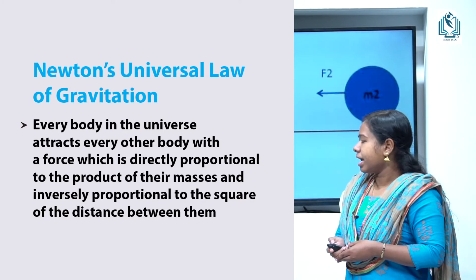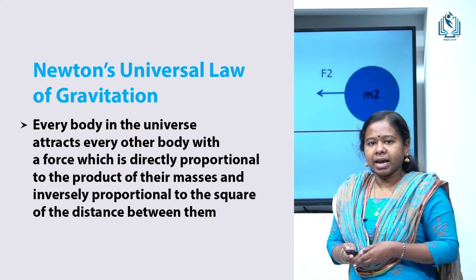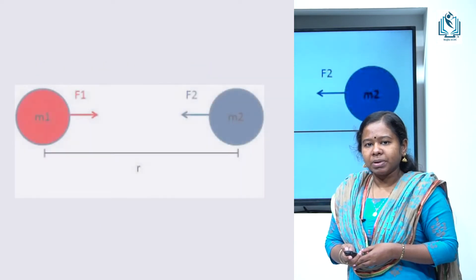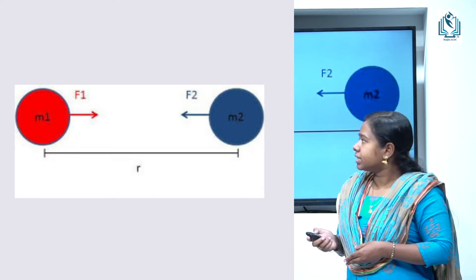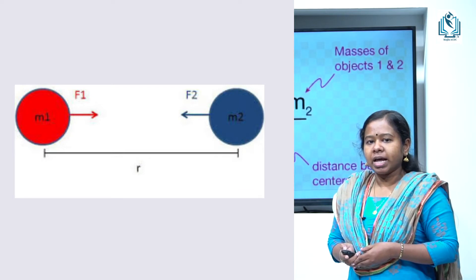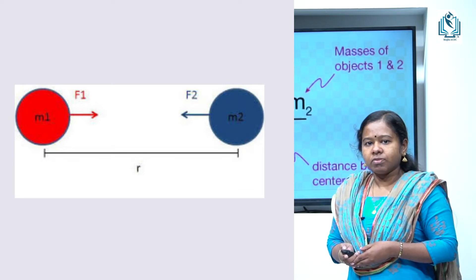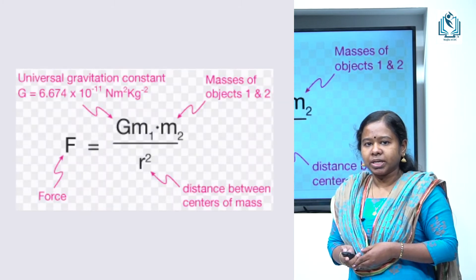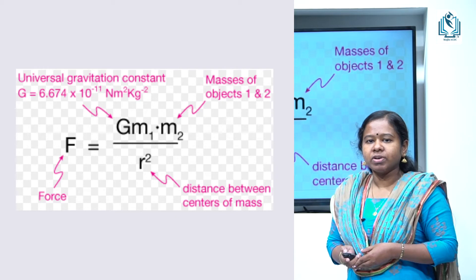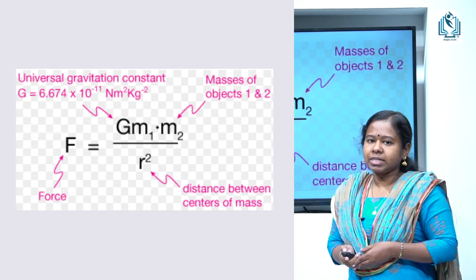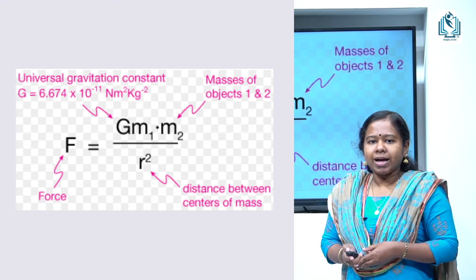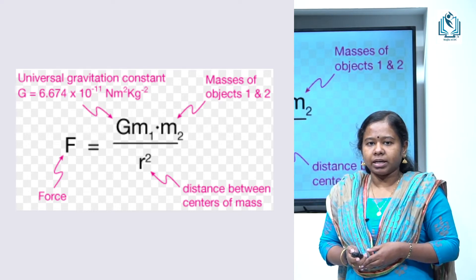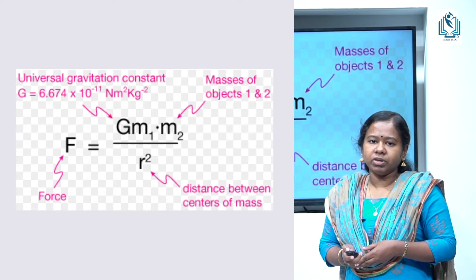Consider two bodies of masses M1 and M2, placed at locations A and B, and let R be the distance separation between them. The gravitational force of attraction between these two bodies is given by F = G·M1·M2 / R², where F is the force measured in Newtons and G is the universal gravitational constant. Its value is 6.67 × 10⁻¹¹ N·m²/kg². The value of G is the same for all materials like aluminium, iron, rock, or whatever.